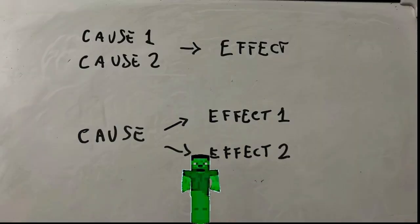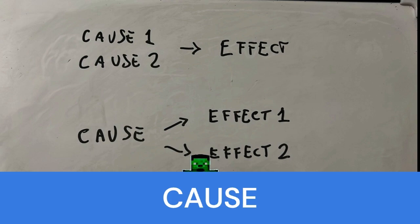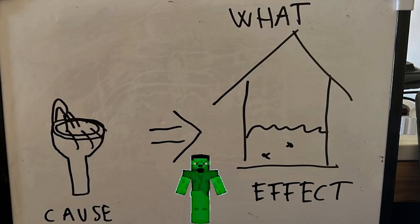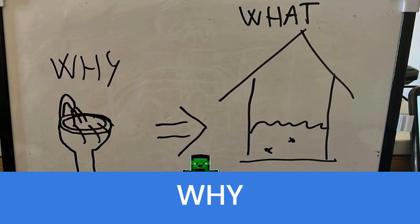We can consider more complicated situations where an effect has multiple causes, or a cause produces multiple effects. But the concept is that every effect must have at least one cause. The effect represents the what, while the cause represents the why.